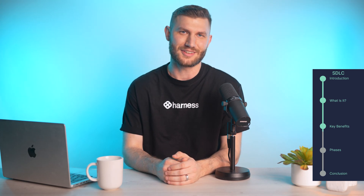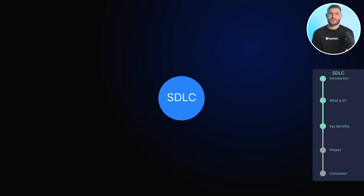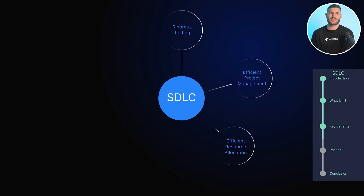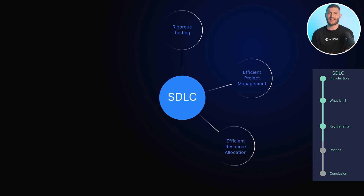Now let's explore some of the key benefits of implementing the SDLC. First, the SDLC emphasizes rigorous testing and quality assurance practices at every stage, enhancing software quality and reliability. Next, it promotes efficient project management and resource allocation, minimizing delays and optimizing resource usage.